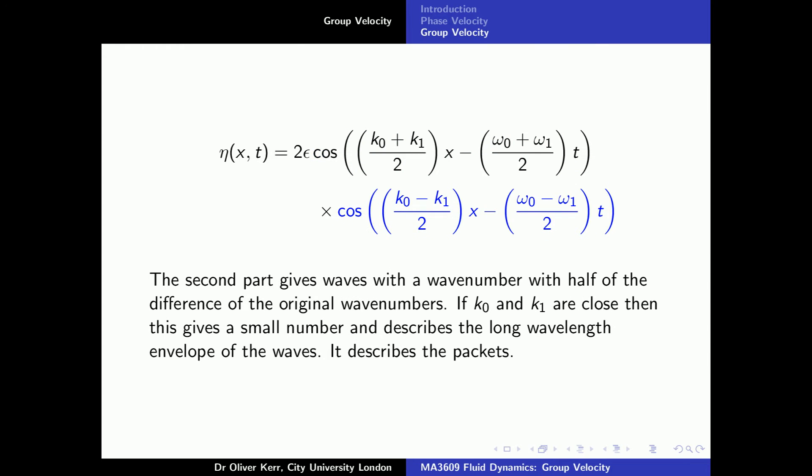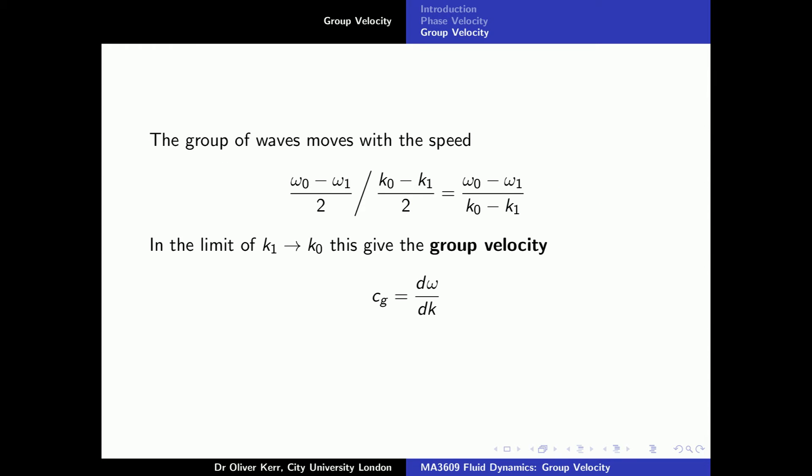The second term has the term k₀ minus k₁ divided by 2 multiplying x and an equivalent term multiplying t. This gives us the wave number for the packets. If k₀ and k₁ are very close together, then the difference will be small. The resulting groups of waves will be very long, so the wave number of the envelope is given by k₀ minus k₁ divided by 2 and the frequency by omega 0 minus omega 1 divided by 2. The speed that the envelope moves to the right will be given by its frequency divided by its wave number. This is omega 0 minus omega 1 divided by k₀ minus k₁.